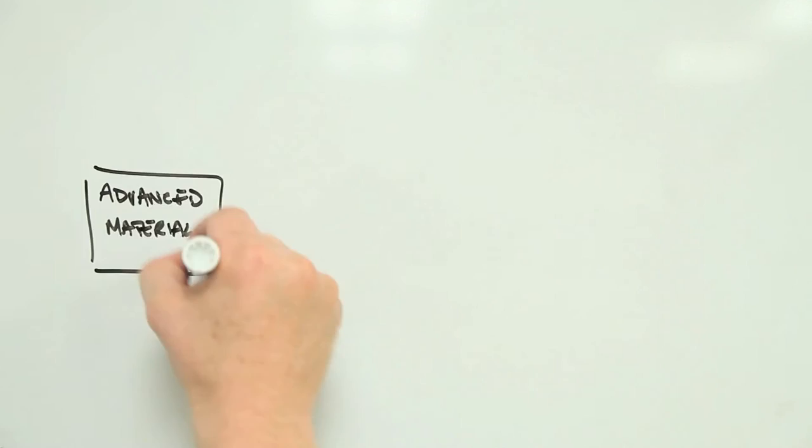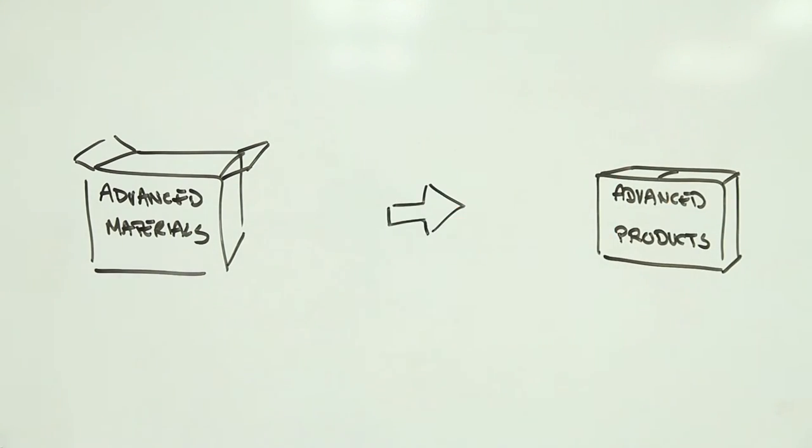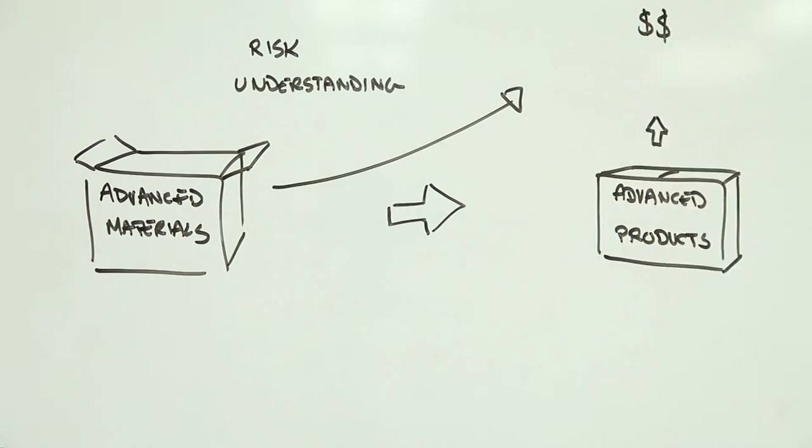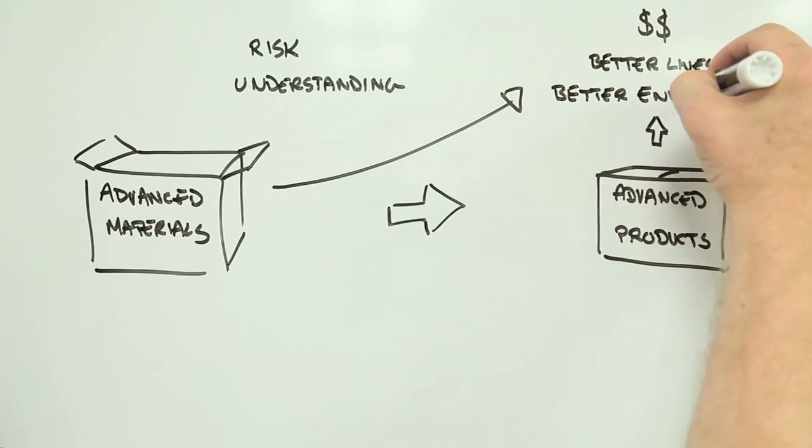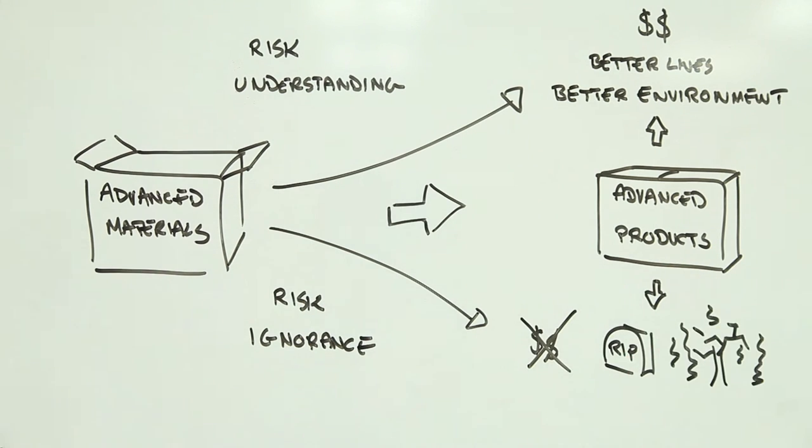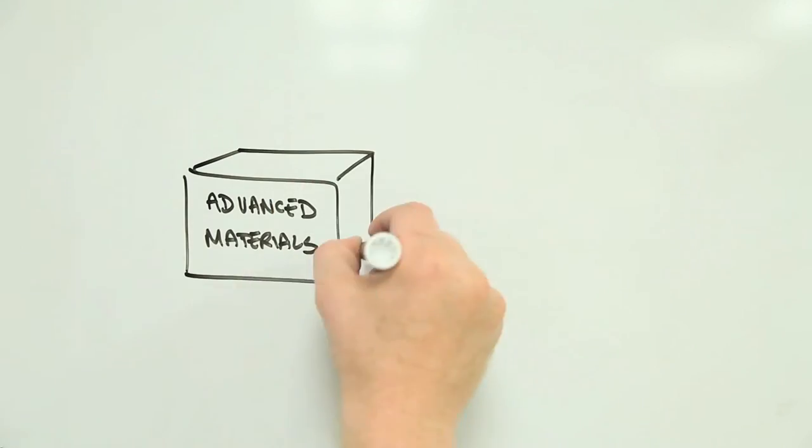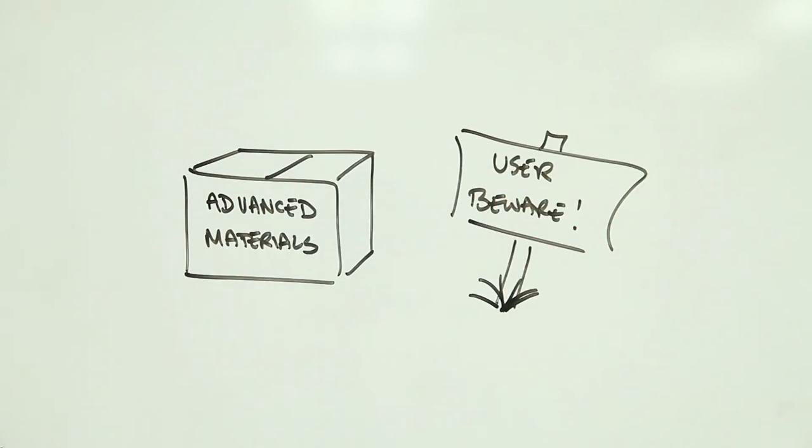Exploring the potential ways new materials can cause harm is important. If you want to make money from advanced materials and the products they're used in, maiming or killing your clientele in the process is not a great business strategy. And surprising as it may seem, many folks in business would rather be improving people's lives than making them worse. But if you've got a brand new, never-before-used material, how do you know what it might do that you probably don't want it to?